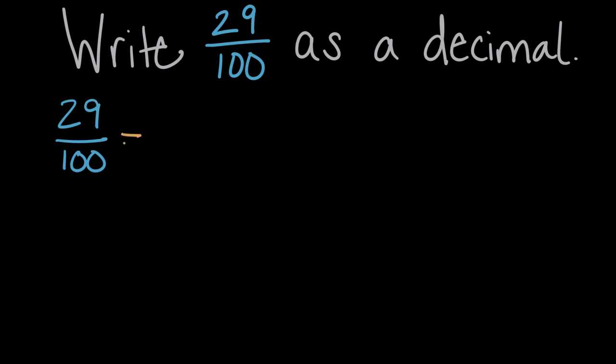29 hundredths, we can break that down into 20 hundredths plus nine hundredths. 20 hundredths plus nine more hundredths is equal to 29 hundredths. So we've just broken it down some here. It's still equivalent to 29 hundredths. We're just taking it apart trying to get to place values.